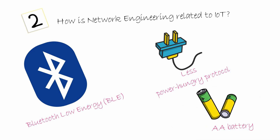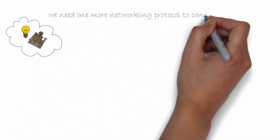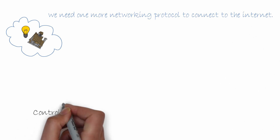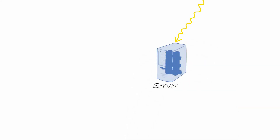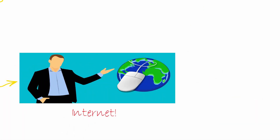But what if the data needs to be sent to the cloud, so that you can control the lights in your home from a different country? In this case, we need one more networking protocol to connect to the internet. Usually, the controller is connected to a local area network, or LAN, through Ethernet or Wi-Fi. After that, the data is taken to the server on the internet using fiber optic cables. As you can see, for a simple application like controlling a light with a smartphone app, we need Bluetooth and Wi-Fi or Ethernet. Thus, without networking, we can't get our things on the internet.